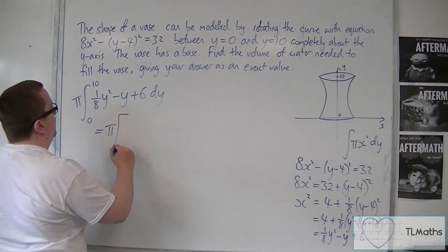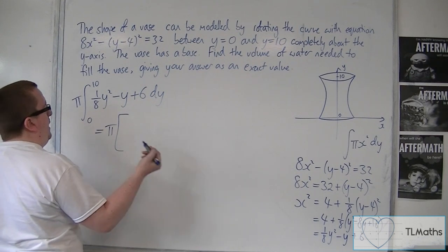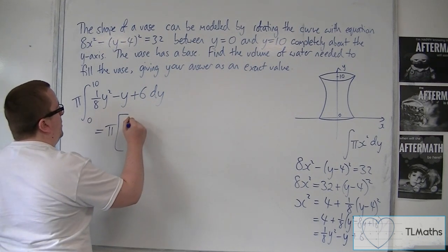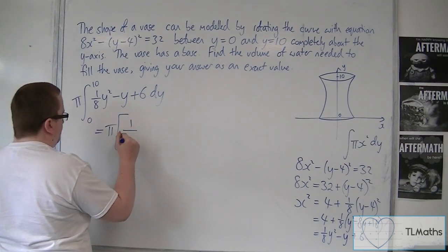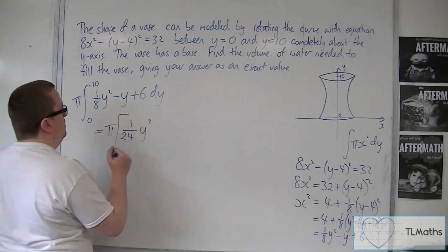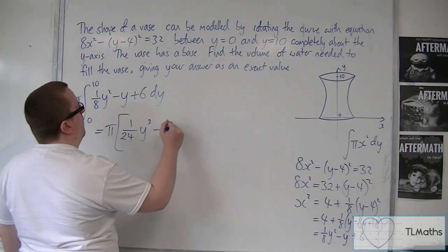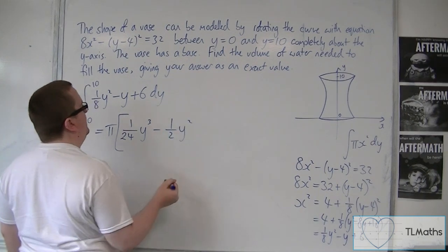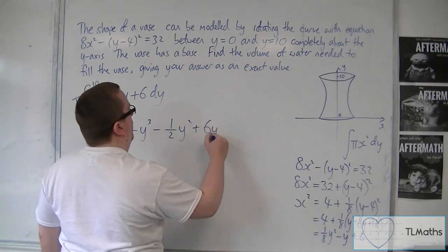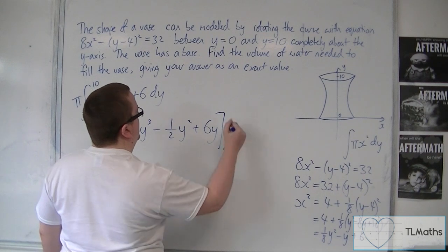So we've got π lots of, add 1 to the power, divided by the new power. So we're going to have 1/24 y³. Then we've got -½y² + 6y, evaluated between 0 and 10.